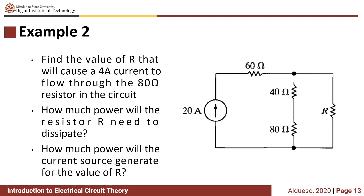To find the value of R that will cause a 4 ampere current to flow through the 80 ohm resistor in the circuit. Next, how much power will the resistor R need to dissipate? And lastly, how much power will the current source generate for the value of R? So the first question: find the value of R that will cause a 4 ampere current to flow through the 80 ohm resistor in the circuit.